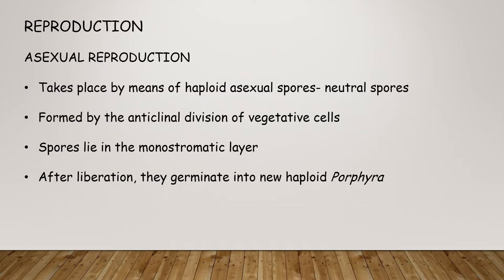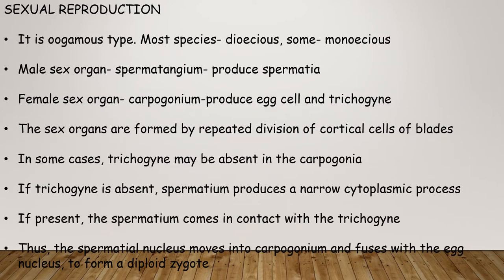In asexual reproduction, it takes place by means of a haploid asexual spore called a neutral spore, formed by anticlinal division of a vegetative cell. Spores lie in the monostromatic layer; after liberation they germinate into a new haploid Porphyra. In sexual reproduction, it is an oogamous type; most species are dioecious and some are monoecious.